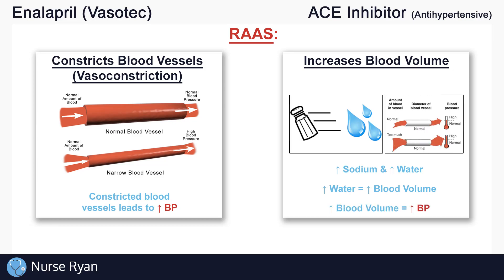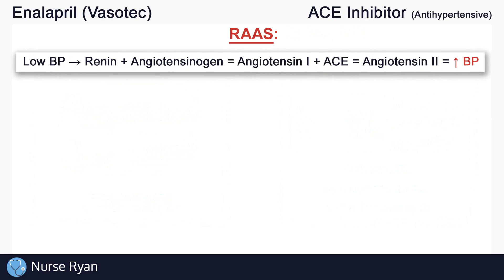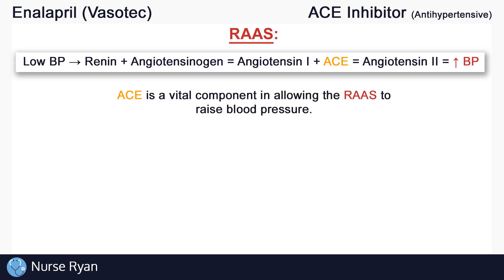The main takeaway here is that the RAA system helps to raise blood pressure. It accomplishes this by going through a few different steps, one of which involves something called angiotensin converting enzyme, or ACE for short. ACE is a vital component in allowing the RAA system to raise blood pressure, and without it, the RAA system would not function.